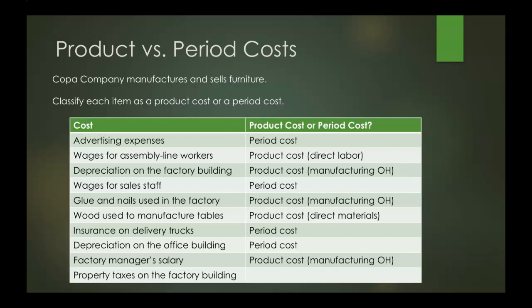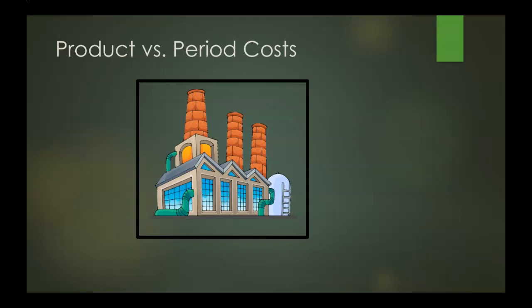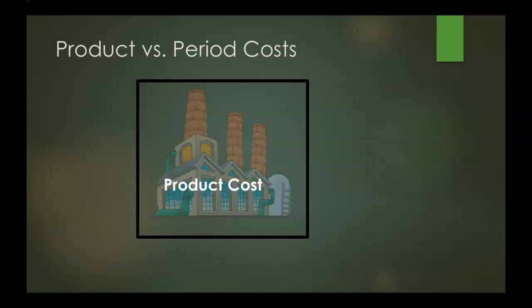And the last one is property taxes on the factory building. This will be a product cost and once again manufacturing overhead, because the taxes are on the factory itself. So just as a recap: anything inside of the factory will be a product cost, and anything outside of the factory will be a period cost.